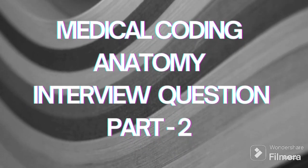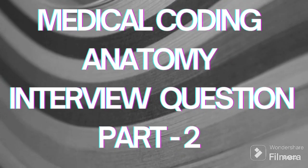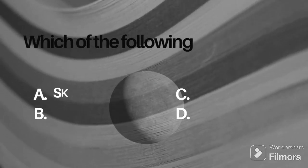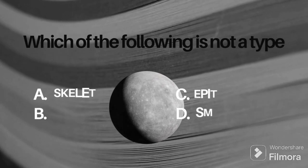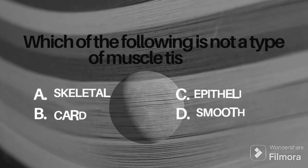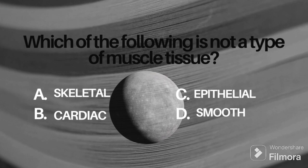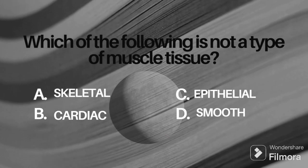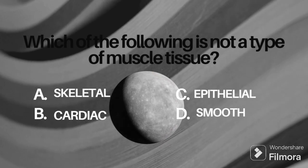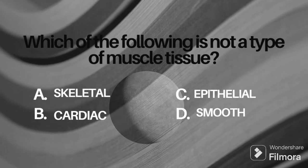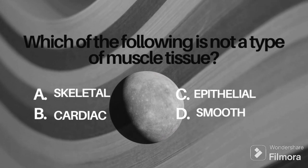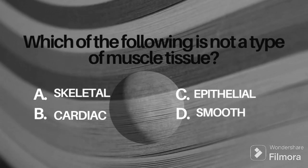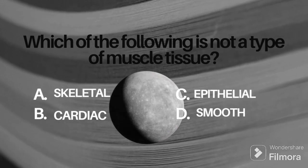The first question is: which of the following is not a type of muscle tissue? Option A: skeletal, B: cardiac, C: epithelial, D: smooth. Give your answer in the comment box.